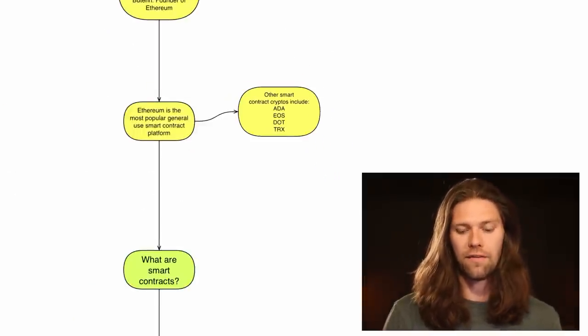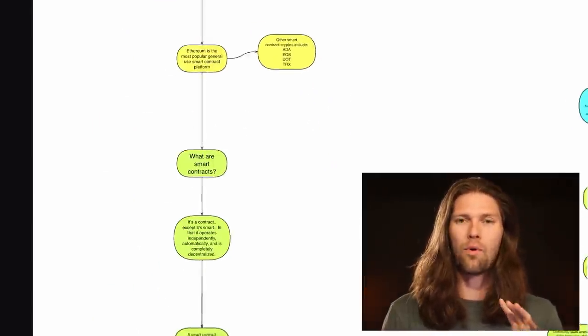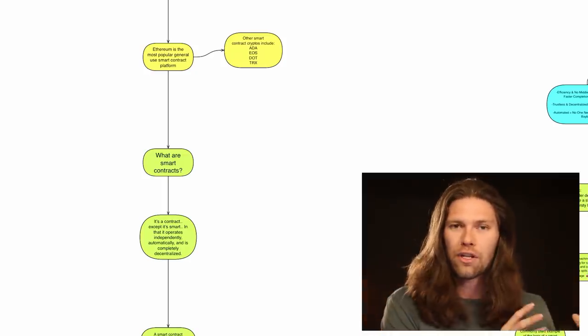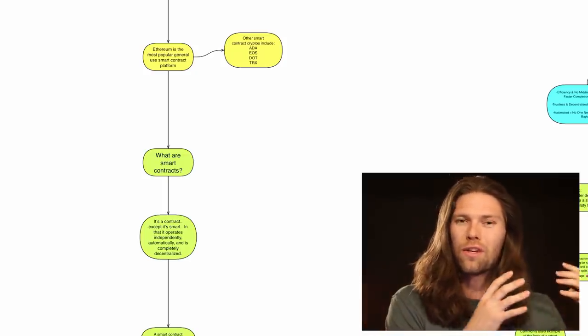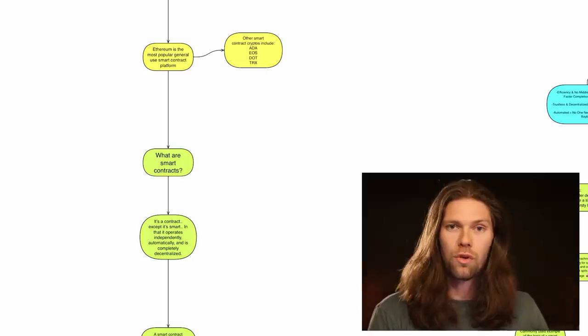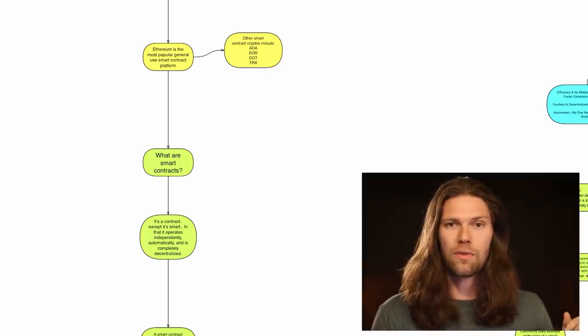Also, if you're interested in buying any of the various smart contract coins referenced earlier, check out the KuCoin exchange linked in the description — that's the exchange used for buying, selling, lending, and staking. If you're looking for a beginner exchange, you might want to start with Coinbase, also linked in the description.